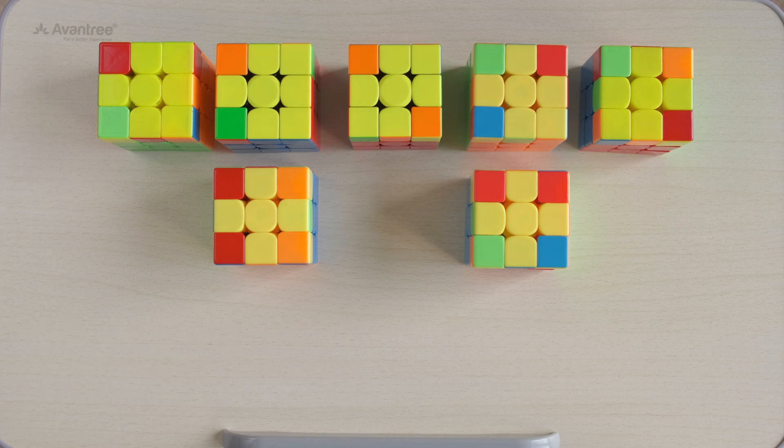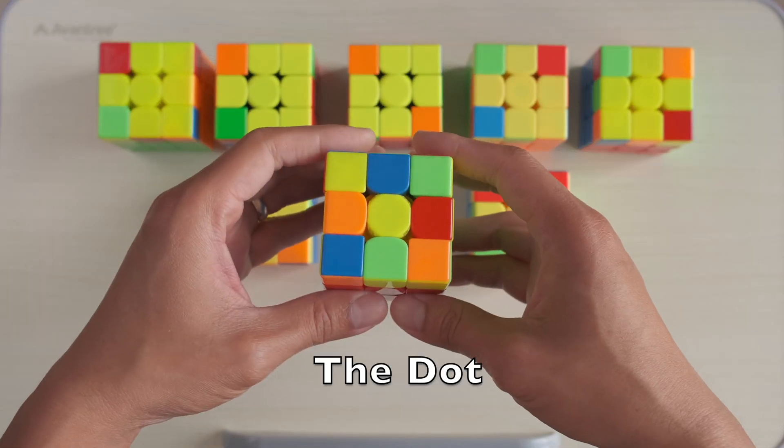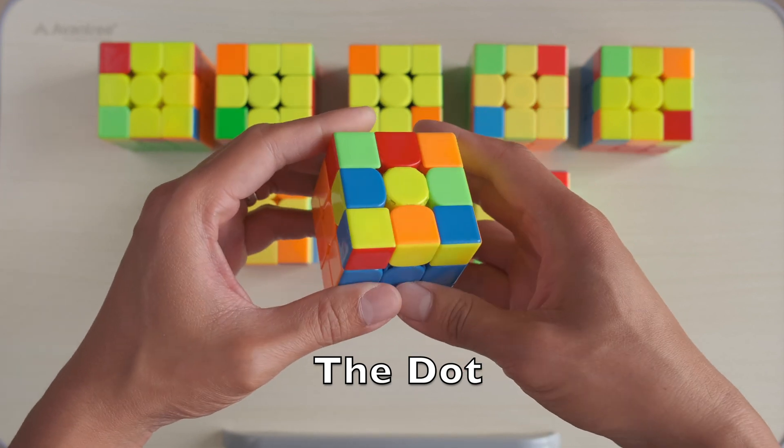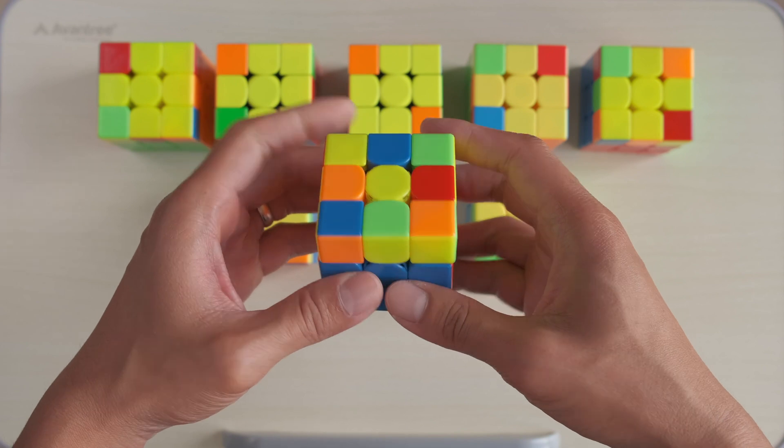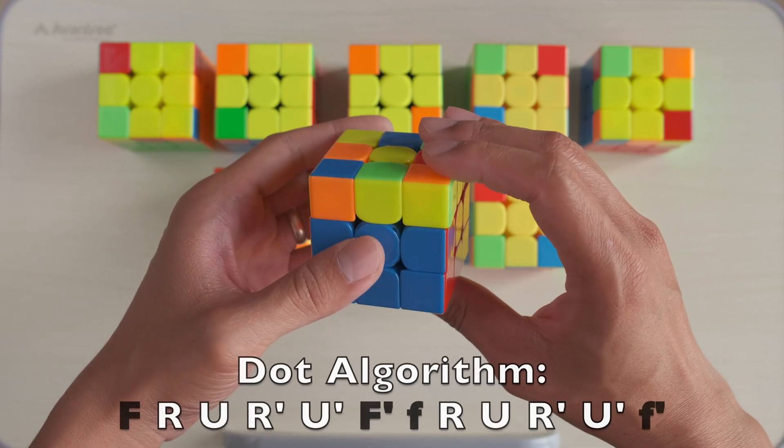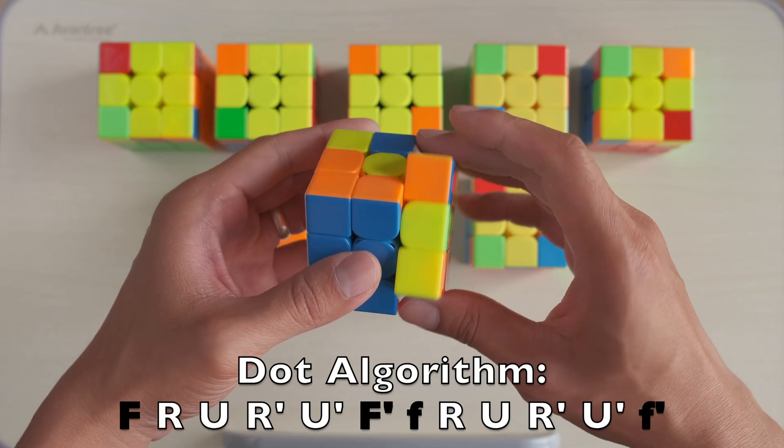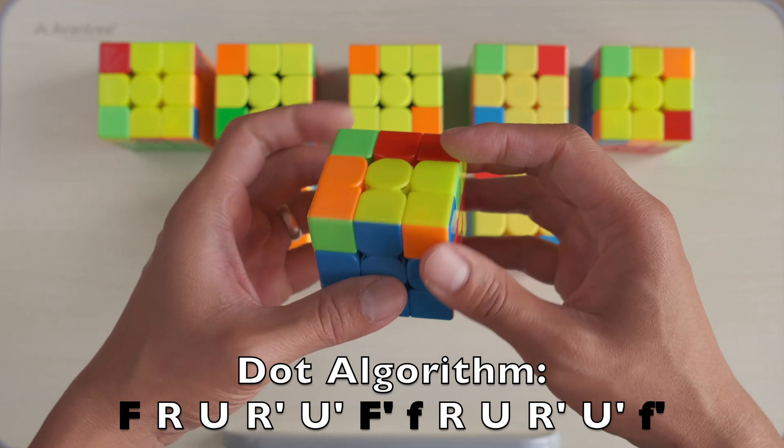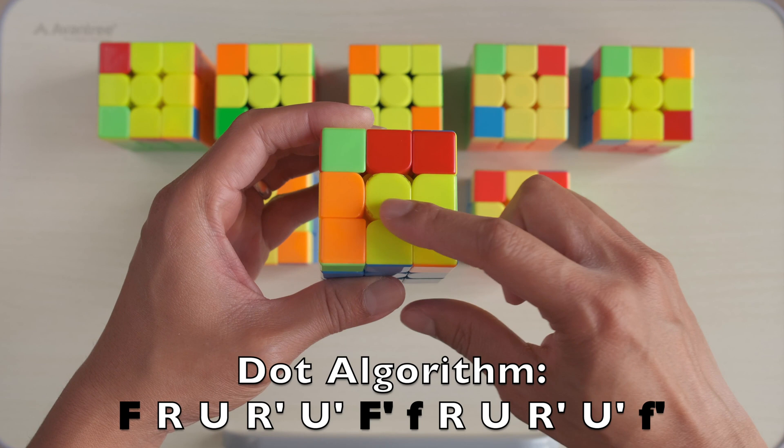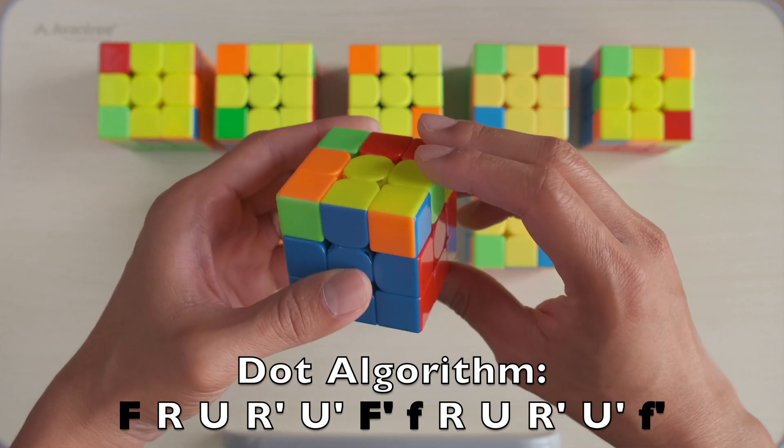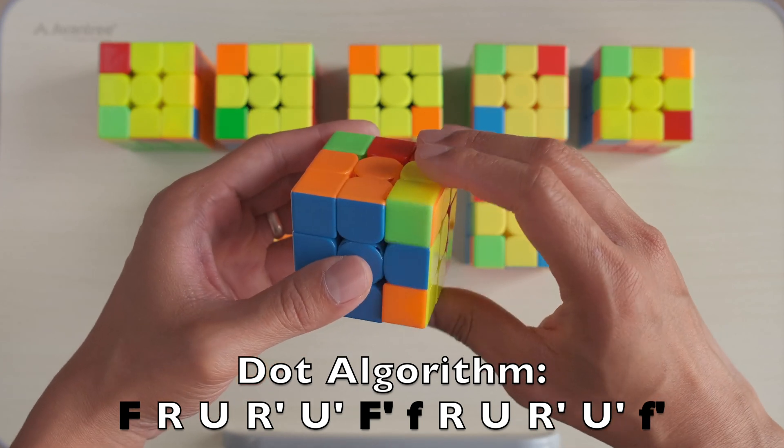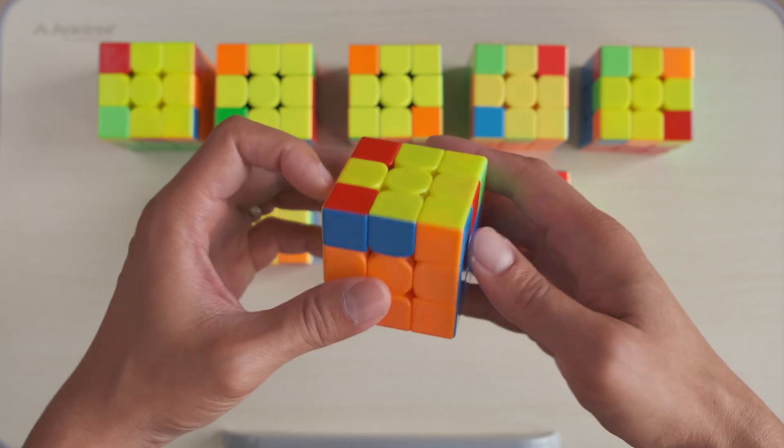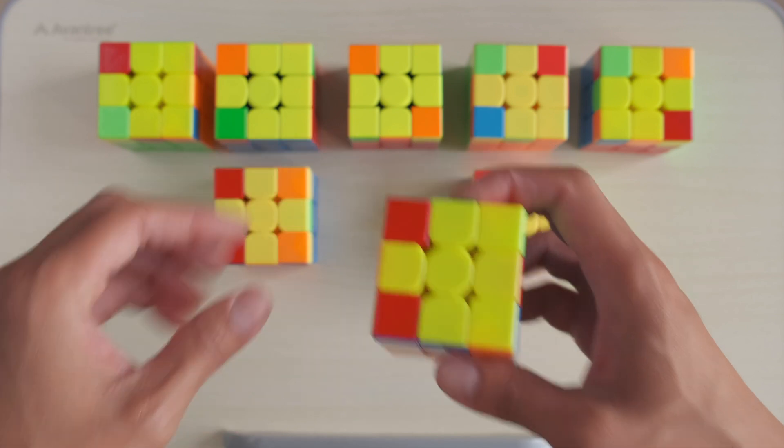Now here is the third pattern. We call this one the dot. In order to do the dot algorithm, we can start from anywhere: F, R, U, R', U', F', small f, R, U, R', U', small f'. Here we have one of the patterns of the cross.